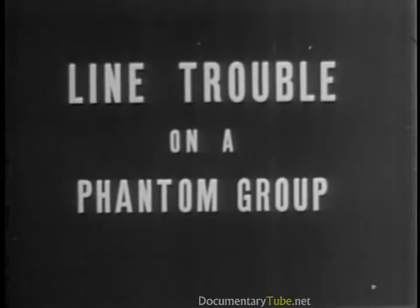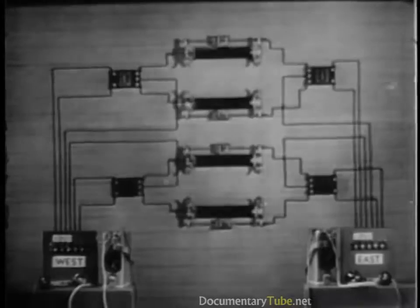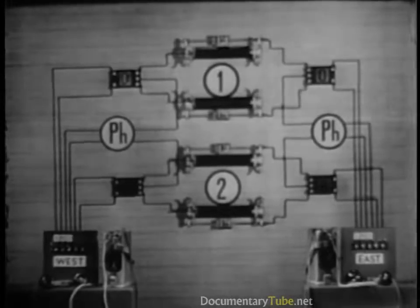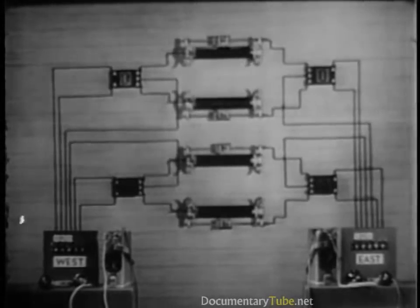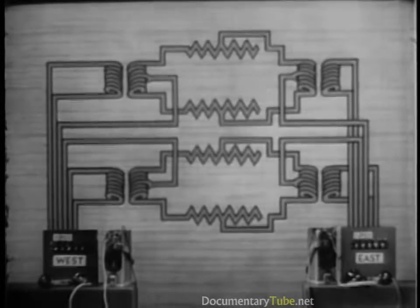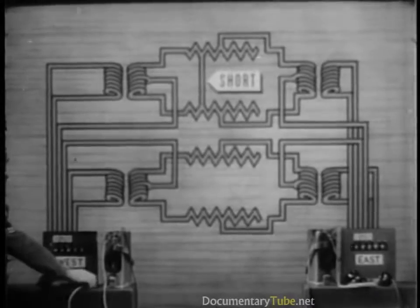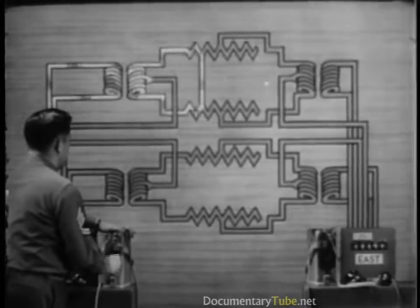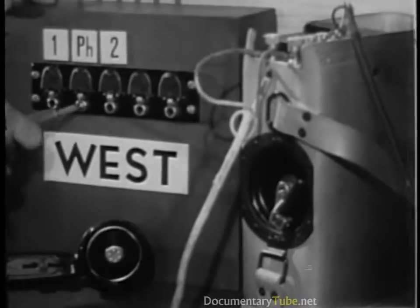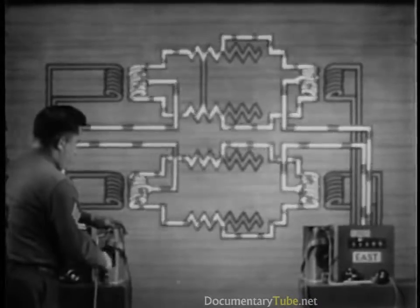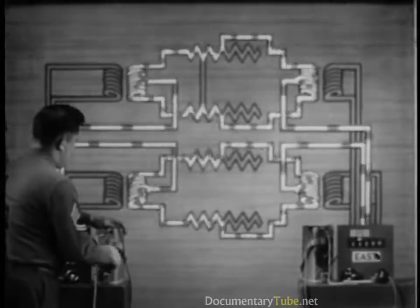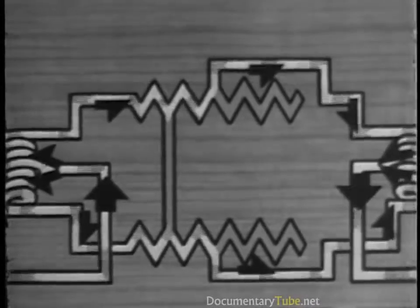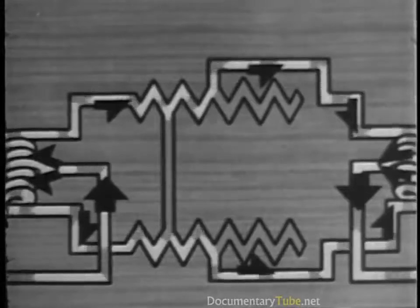Now for some typical examples showing the effect of line trouble on a phantom group. This phantom group consists of three telephone circuits; ringing and voice currents act alike here, so we will confine our demonstration to ringing current only. If one of the side circuits is accidentally shorted, its reaction is the same as a shorted simplex — the ringing current of the faulty circuit never reaches its destination. When we ring on the phantom, however, it is unaffected, because the two halves of the phantom current are traveling in the same direction; when they reach the short they buck each other and no current flows through the short. That is exactly what happened in the telegraph channel of the shorted simplex. The other side circuit is unaffected.